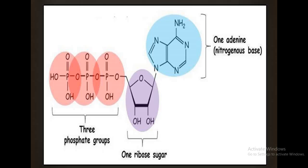Carbon one of pentose sugar is attached with the nitrogenous base, and carbon five is attached with the phosphoric acid, that is the phosphate group. The bonding between the hydroxyl group of carbon five with the phosphate is called ester linkage. The nitrogenous base is attached at the carbon one position.